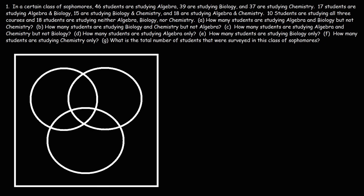Today we're going to focus on solving word problems that deal with Venn diagrams containing three categories. In a certain class of sophomores, 46 students are studying algebra, 39 are studying biology, and 37 are studying chemistry. 17 students are studying algebra and biology, 15 are studying biology and chemistry, and 18 are studying algebra and chemistry. Now 10 students are studying all three courses, and 18 students are studying neither algebra, biology, nor chemistry.